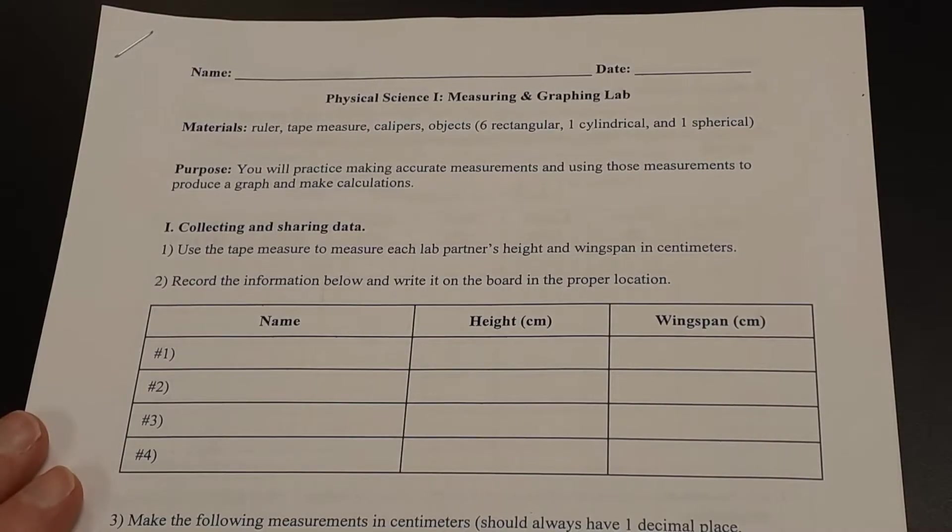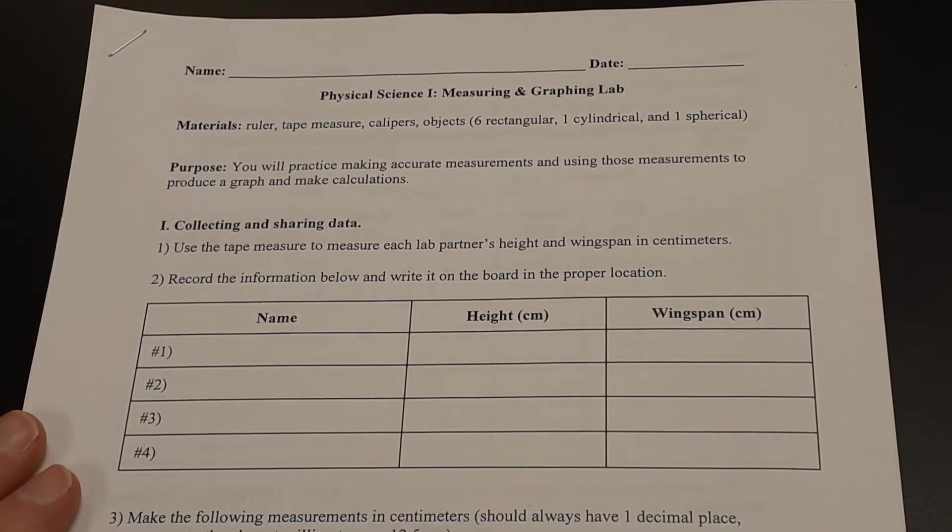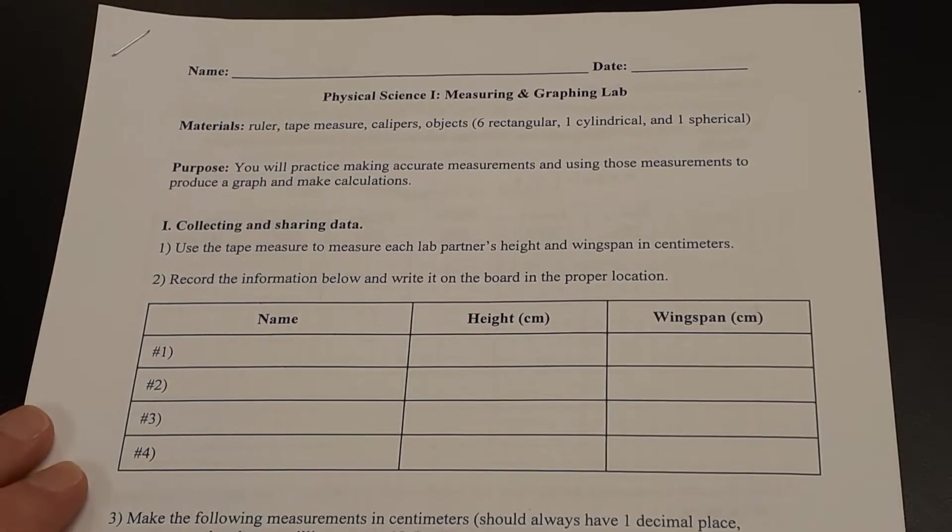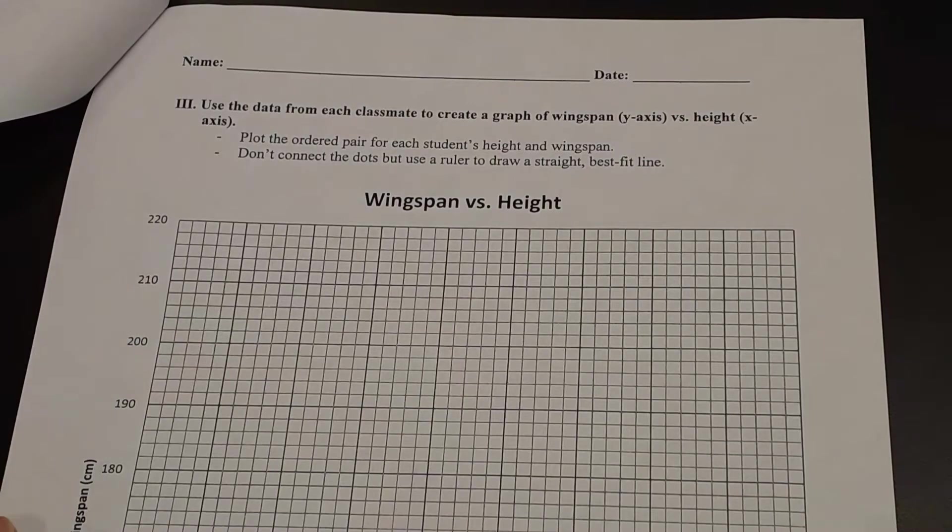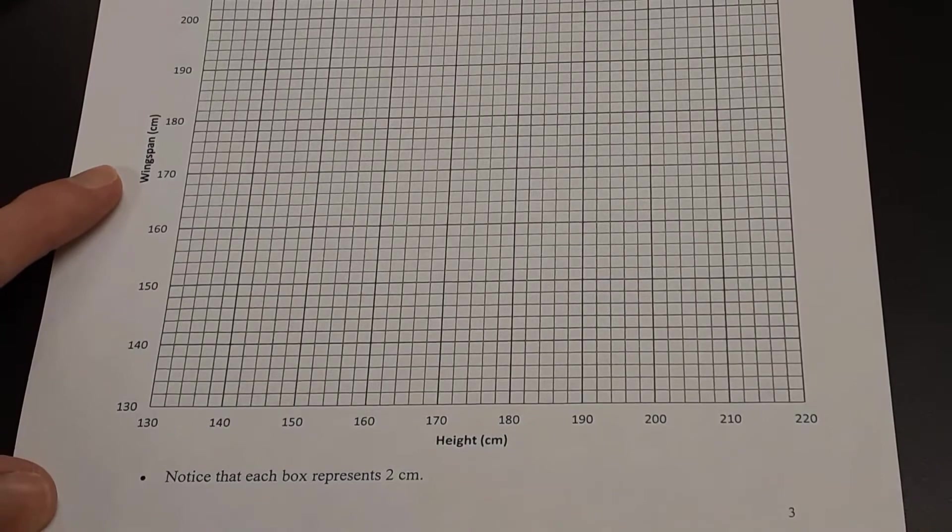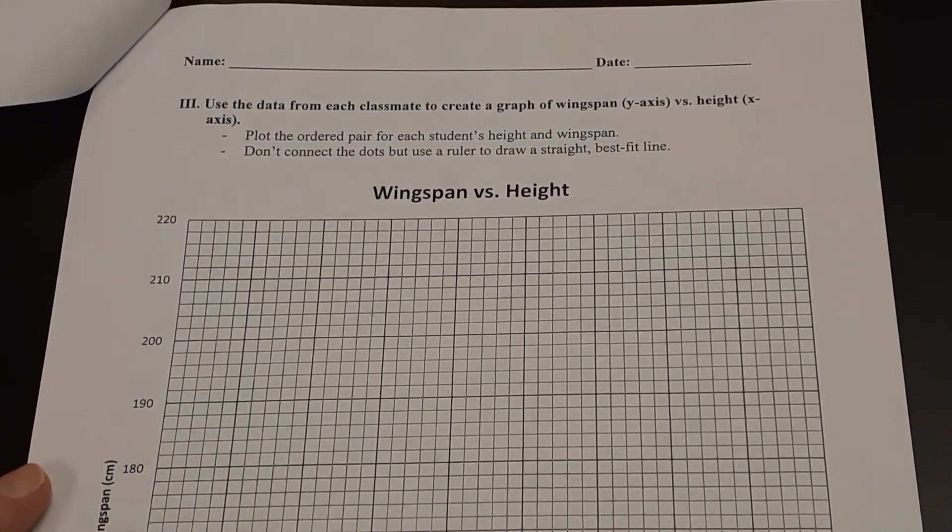Let's take a quick look at this handout so you get an idea of what's going on. You see the materials and the purpose there. First thing I would have you do if you were in lab would be to gather up with your lab mates and measure each other's height and wingspan. I'm going to show you some of that data on the board here in just a minute, but you'll use those heights and wingspans that I'm going to show you on the board in order to plot this graph of wingspan versus height.